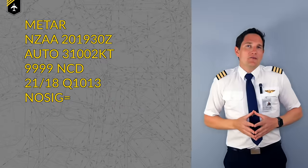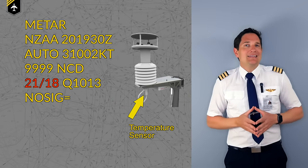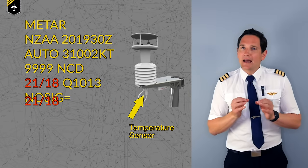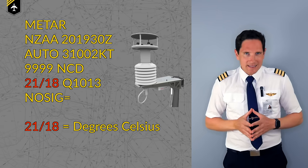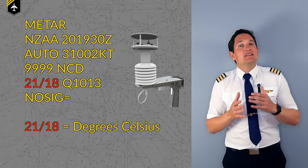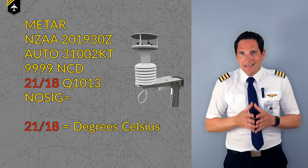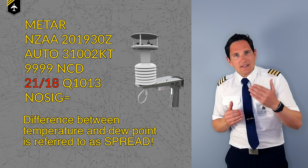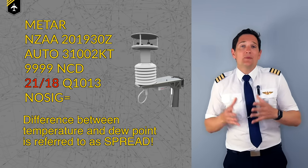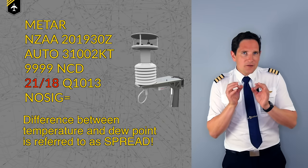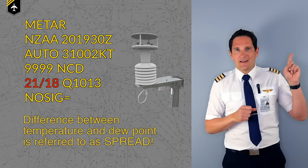Continuing with our report, we have the numbers 21/18 showing us the temperature and dew point, usually shown in degrees Celsius. The dew point is important as it tells pilots about the humidity at the airport and gives an idea of whether any cloud formations could be expected. For more information about the dew point, check out my video on that topic.